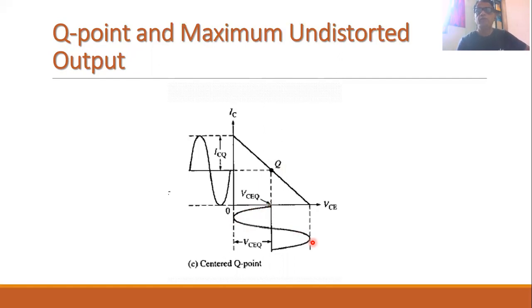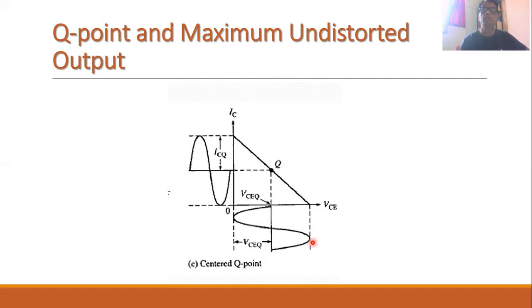Thank you friends for watching this session. In the next session, we will be discussing the different types of biasing circuits and we will see how, by using these biasing circuits, we can set the Q point of the transistor at the center of the DC load line. Thank you.